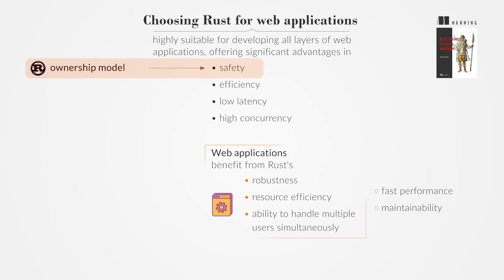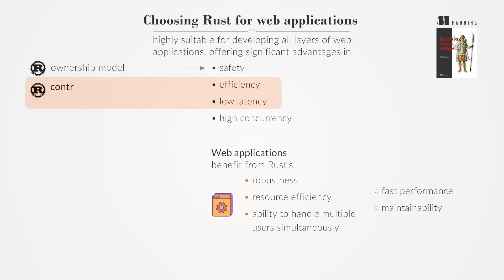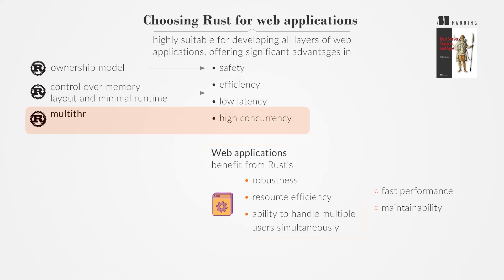Rust's ownership model enhances safety by preventing common memory errors and ensuring thread safety. Its control over memory layout and minimal runtime contribute to resource efficiency and low latency, while features like multi-threading and asynchronous I/O support robust concurrency.